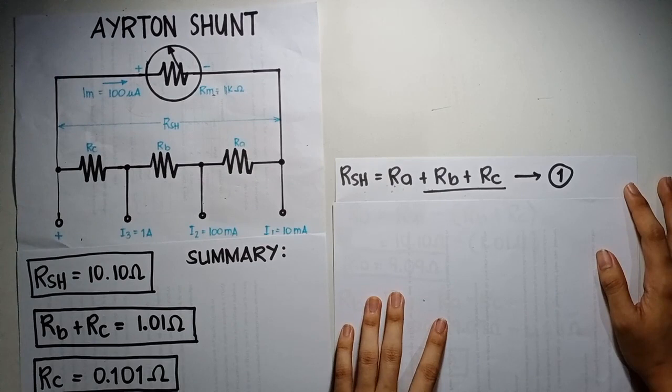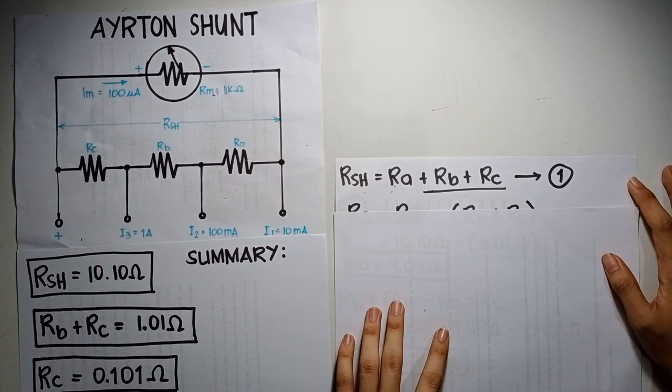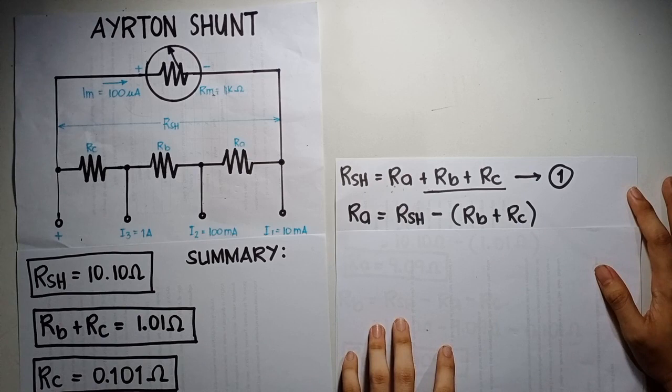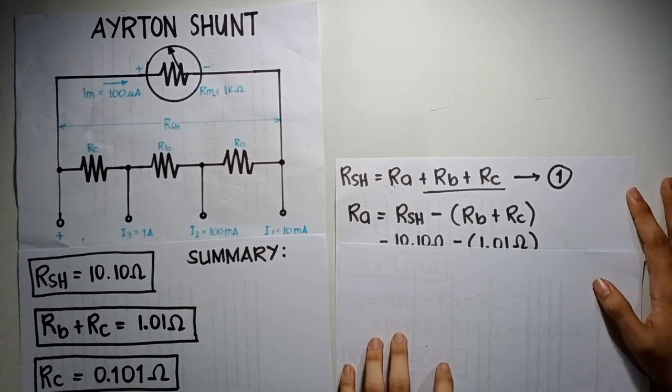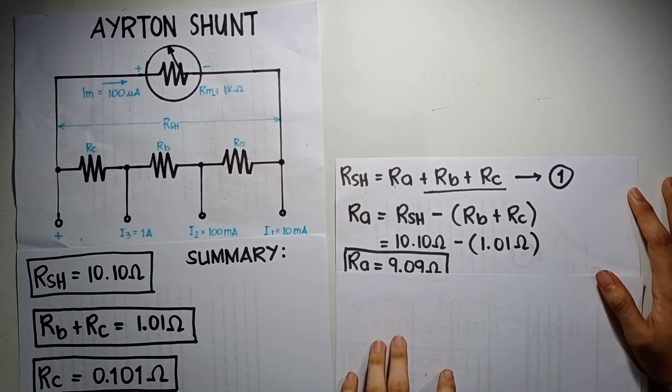Using the first equation, RSH is equal to Ra plus Rb plus Rc. We can have an equation for Ra, which is equal to RSH minus quantity Rb plus Rc. Substitute the given values and the computed value on our summary. Now, we have Ra is equal to 9.09 ohm.